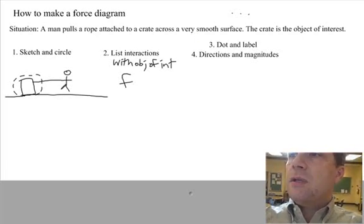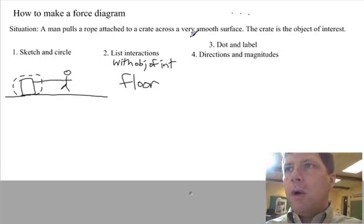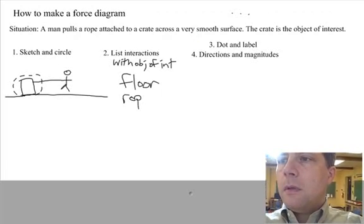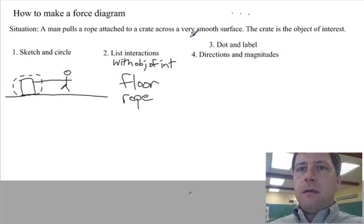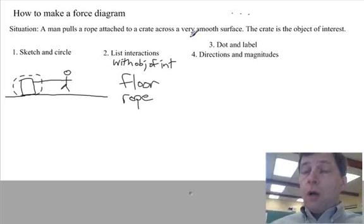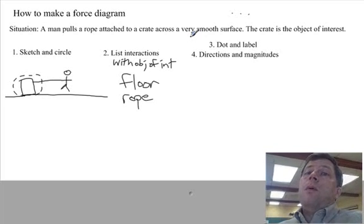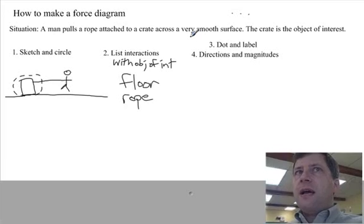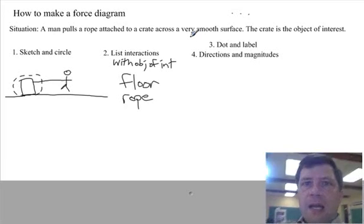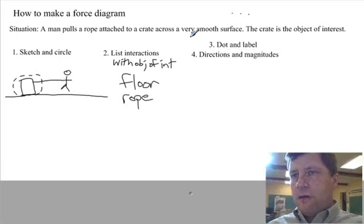What's touching? Well, let's see. There's the floor. What else is touching it? The rope. Now, here's tricky. Is the man interacting with the crate? Strictly speaking, no. The man is not touching the crate. You can't interact with something without touching it if you're a person. Now, there is one thing that's interacting with this crate. There's one thing that's exerting a push or a pull on this crate without touching it. That's the Earth.